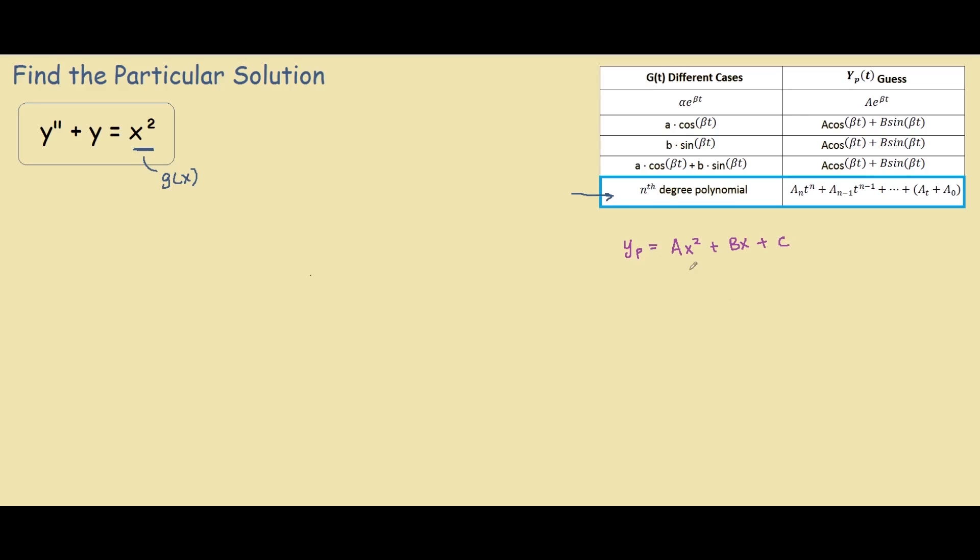a, b and c are constants, and over here since our g of x is raised to the power of 2, we guess the most general form for our second degree polynomial.